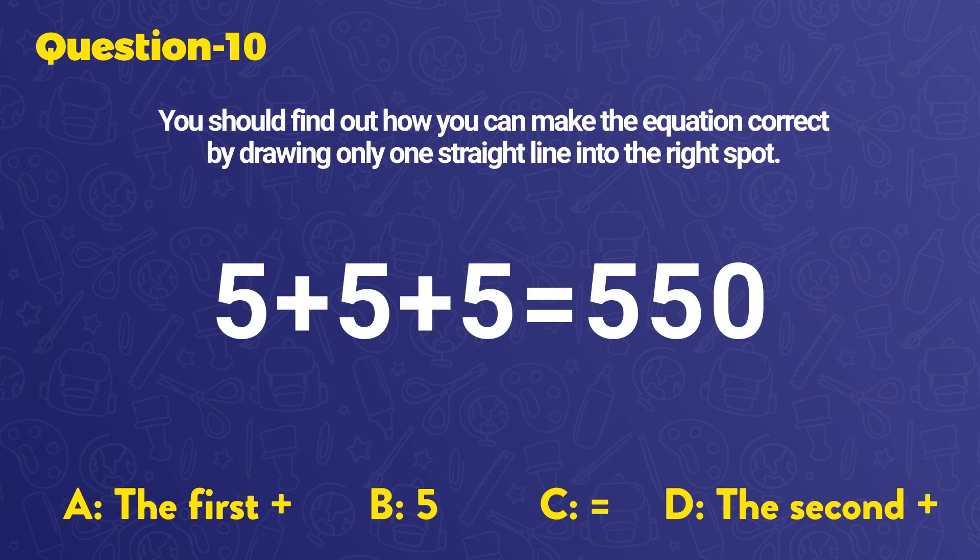Now let's find out the real answer. The equation's answer should be 550. Let's draw a line on the first plus sign. This turns it into a 4. So the equation will become correct as 545 plus 5 equals 550. The right answer is A.